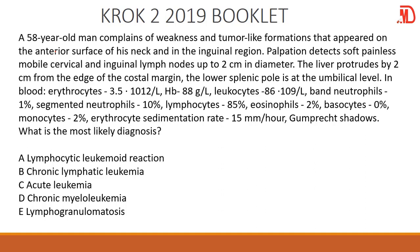Okay so this is a big question but don't be overwhelmed. Just go straight and look at the blood smear. We have erythrocytes, and look at the lymphocyte number: 85 percent. They've even given you a clue here — Gumprecht shadows, also called smear cells or smear shadows. In other books they will say smear cells. Anytime you see these things, they are simply referring to chronic lymphocytic leukemia. Your answer is straightforward: chronic lymphatic leukemia, also called chronic lymphocytic leukemia.